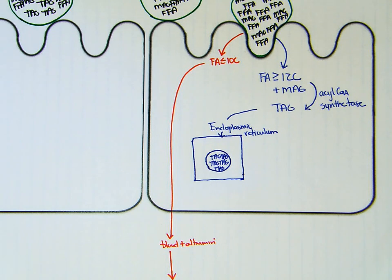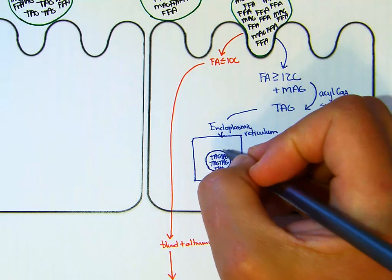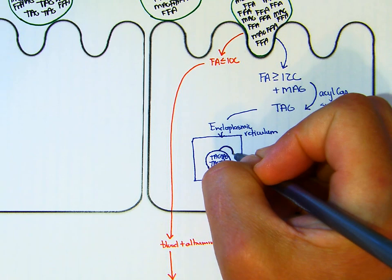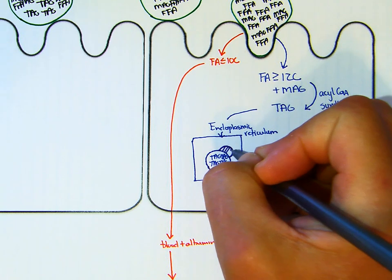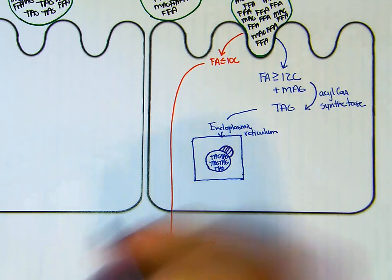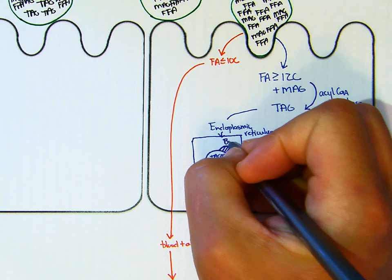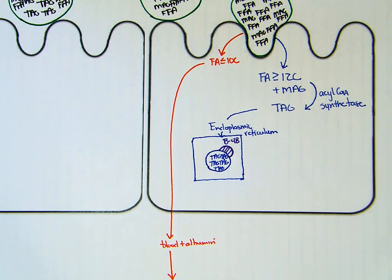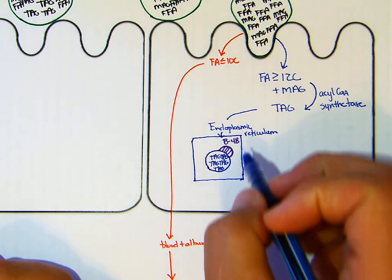After that, we're going to stick a protein on it, and that protein is B48. We really want to remember that protein is important because B48 is going to tell the muscle and adipose that this is a chylomicron and that they're supposed to do something with it and remove the DAG and free fatty acids from it.